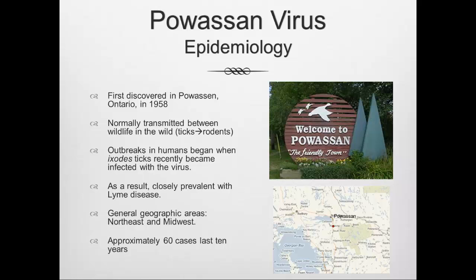Powassan virus is named after the town of Powassan, Ontario, first discovered in 1958. It's normally transmitted between ticks and rodents in the wild. Outbreaks in humans recently began when Ixodes ticks — the etiologic agent of many tick-borne diseases in the Northeast, including Lyme disease — became infected with the virus. As a result, this disease is closely prevalent with Lyme disease, generally occurring in the Northeast and Midwest, with approximately 60 cases in the last 10 years.